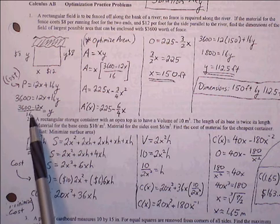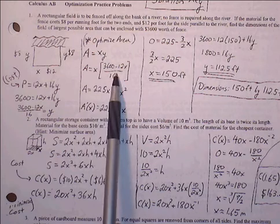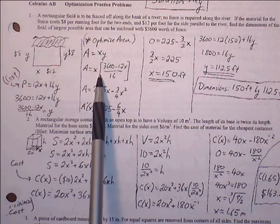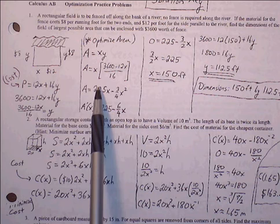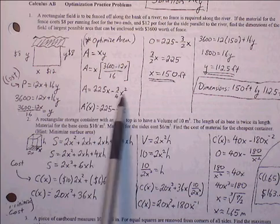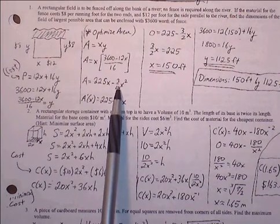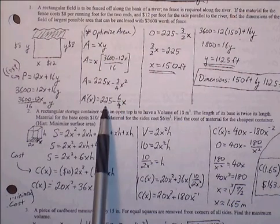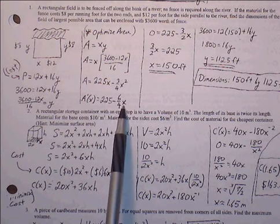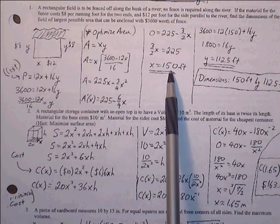We solve the cost equation for y by subtracting 12x from both sides and dividing by 16. We plug this expression in for y to get the area equation down to one variable. Distributing x through and dividing by 16 gives us 225x minus three-fourths x squared. Taking the derivative using power rule: 225x becomes 225, and three-fourths x squared becomes three-halves x. Setting the derivative equal to zero and solving gives x equals 150.